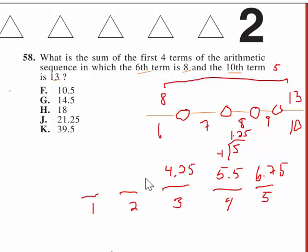Minus 1.25 from this gives us 3. And subtract 1.25 again is 1.75.